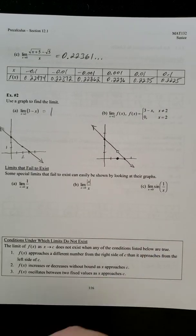Now, some special limits that fail to exist. So if we look at their graphs, we're going to see why they don't exist. So 1 over x. If we draw 1 over x, it's going to look something like this.